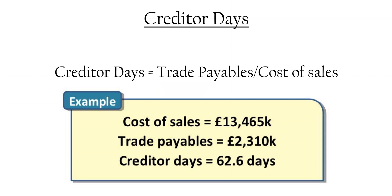Creditors are the opposite — they appear on your balance sheet as trade payables. This is when you've received trade credit from a supplier and it's your financial obligation to make payment. The formula is trade payables divided by cost of sales, times 365. Using figures of trade payables £2,310 divided by cost of sales £13,465, multiplied by 365, gives 62.6 days.